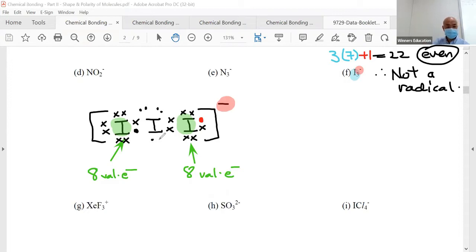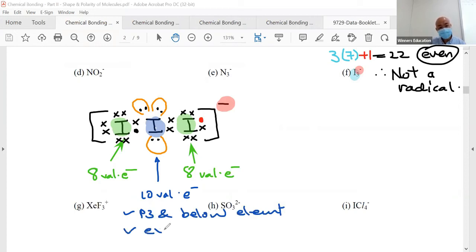Three sets of lone pairs which I will arrange it to show you. If you look at iodine, how many electrons does it have? A lot. One, two, three, four, five, six, seven, eight, nine, ten. Yes, ten. But it's okay because it is a period three and beyond or below element, which can expand its octet. Make sense?